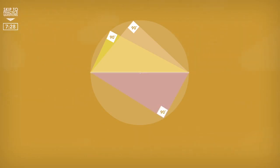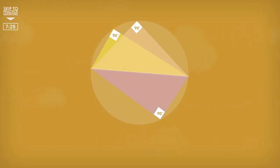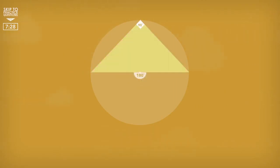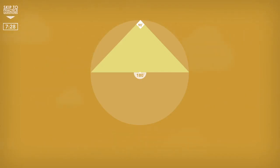The angle will always equal 90 degrees. Now, there's an easy way to remember this one, and it relates back to theorem 2. We know the angle at the circumference must equal half the angle at the center. The angle at the center of the circle is 180 degrees, so the angle at the circumference must equal 90 degrees. In essence, this theorem is actually just an extension of theorem 2.